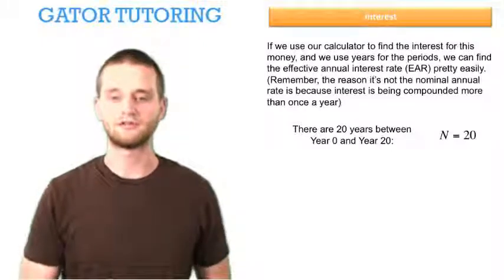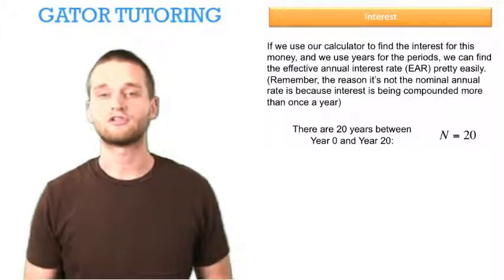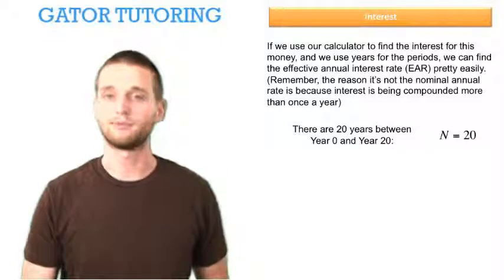So there are 20 years between year 0 and year 20. Since our periods are in years, we enter in 20 for N, the number of periods.